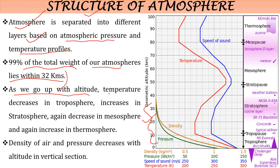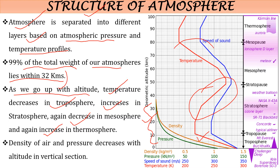As we go up in altitude, temperature is decreasing in the troposphere, then increasing in the stratosphere, then again decreasing in the mesosphere, and again increasing in the thermosphere. This is due to different phenomena occurring in each layer. The troposphere shows a positive lapse rate due to high convective phenomena, while the stratosphere shows a negative lapse rate with no convection. In the mesosphere, convective phenomena leads to a positive lapse rate, and in the thermosphere there is again a negative lapse rate.